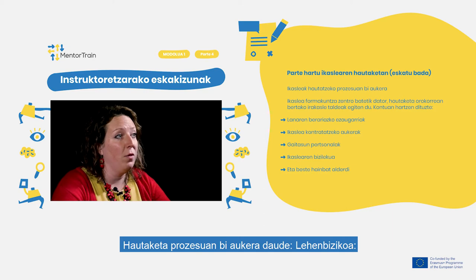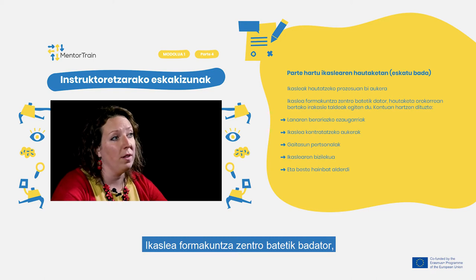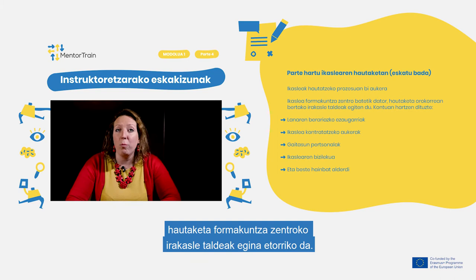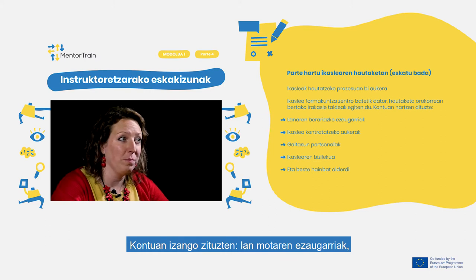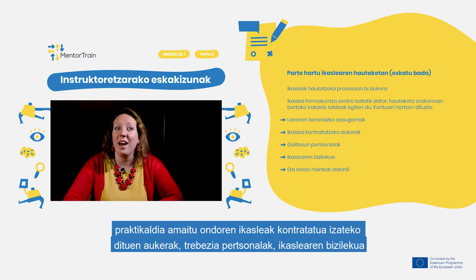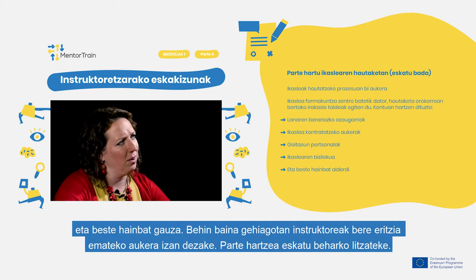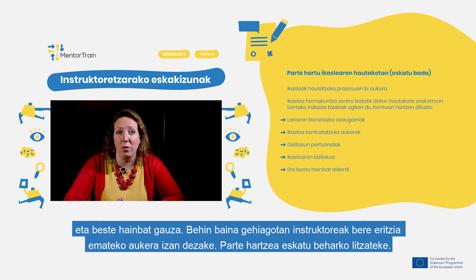There are two options of the selection process of the apprentices. Number one, if the apprentice comes from an education center, the selection is made generally by the group of professors involved in the training. They take into account the specific characteristics of the job, the possibility for the student being hired, individual skills, student's place of residence, and many other aspects. And quite often you can also voice your opinion in the process — just ask to be involved.